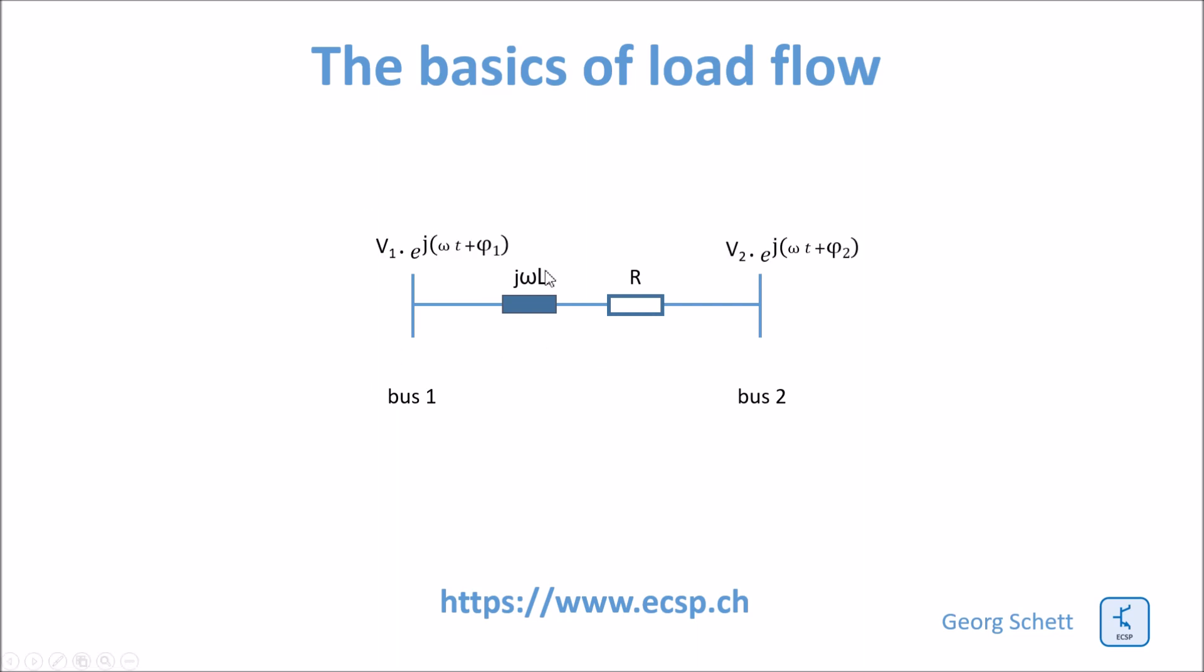At the buses you have voltages. The voltages are represented by phasors. Phasors have a length and they have a multiplier which is e to the power of j times the frequency times t and a phase angle. Phase angle will vary from bus to bus and this is important.